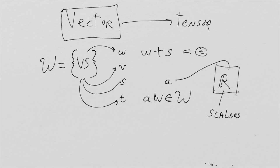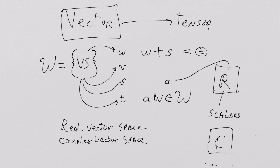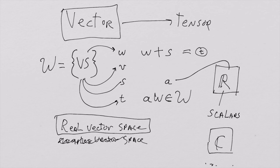Vector spaces use this real number bin. If they use the real number bin, they are called real vector spaces. If they used a bin of complex numbers, they would be called a complex vector space. If you're going to create a vector space, you have to assert the addition property and decide: will it use real numbers or complex numbers? For general relativity, we will always choose real vector spaces. There are some complex vector spaces in general relativity, but not anything we'll cover in these lectures.